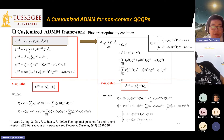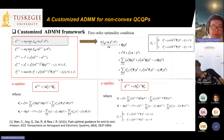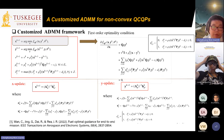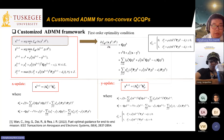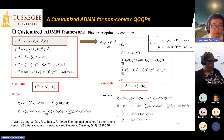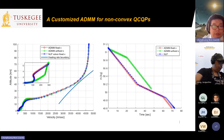In the primal update step, the subproblem with respect to x turns out to be convex, so we can use KKT conditions or first-order optimality conditions to obtain analytical closed-form update laws for x and y. This means all updates in the ADMM framework are computed analytically in closed form, which definitely improves computational efficiency compared to algorithms relying on commercial optimization software.